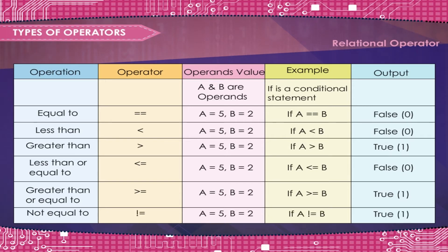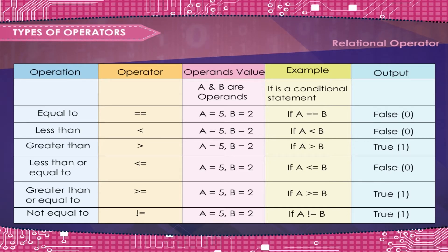Not equal to: A is equal to 5, B is equal to 2. If A is not equal to B — True, 1.